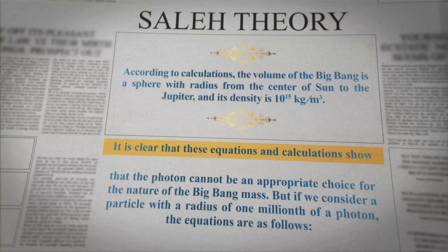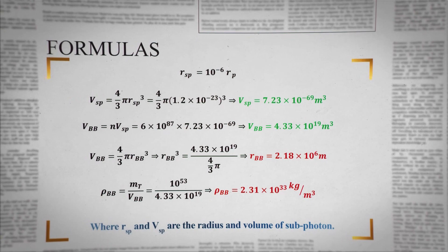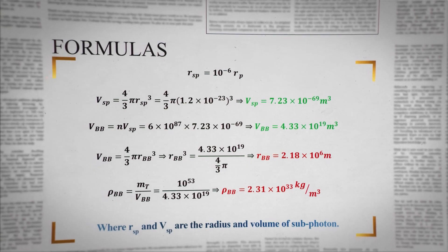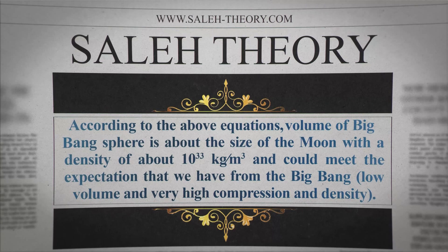But if we consider a particle with a radius of one-millionth of a photon, the equations are as follows. According to the above equations, the volume of the Big Bang sphere is about the size of the Moon, with a density of about 10 to the power of 33 kg per cubic meter, and could meet the expectation that we have from the Big Bang: low volume and very high compression and density.